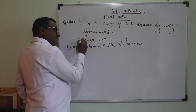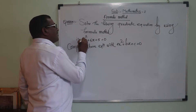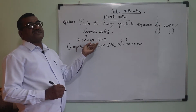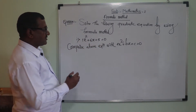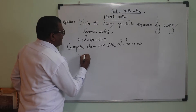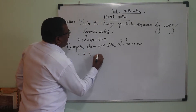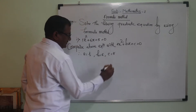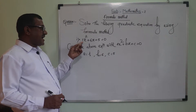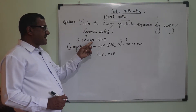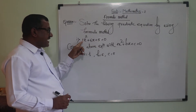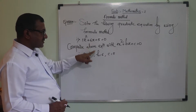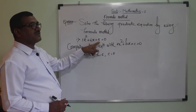If we compare this with ax squared plus bx plus c is equal to zero, then we can find out that the value of a is equal to 1, value of b is equal to 6, and value of c is equal to 5.